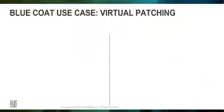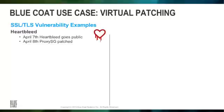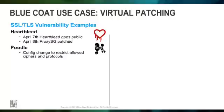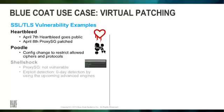As an example of a use case, virtual patching is discussed quite often in the WAF space. On the left side, you can see some of the recent SSL vulnerabilities and the way Bluecoat provided protection. For example, with Heartbleed, it took Bluecoat one day to patch the vulnerability and release a new SGOS version. Poodle simply required a configuration change. Shellshock protection was provided by using Bluecoat's advanced WAF engines without the need for any kind of update.